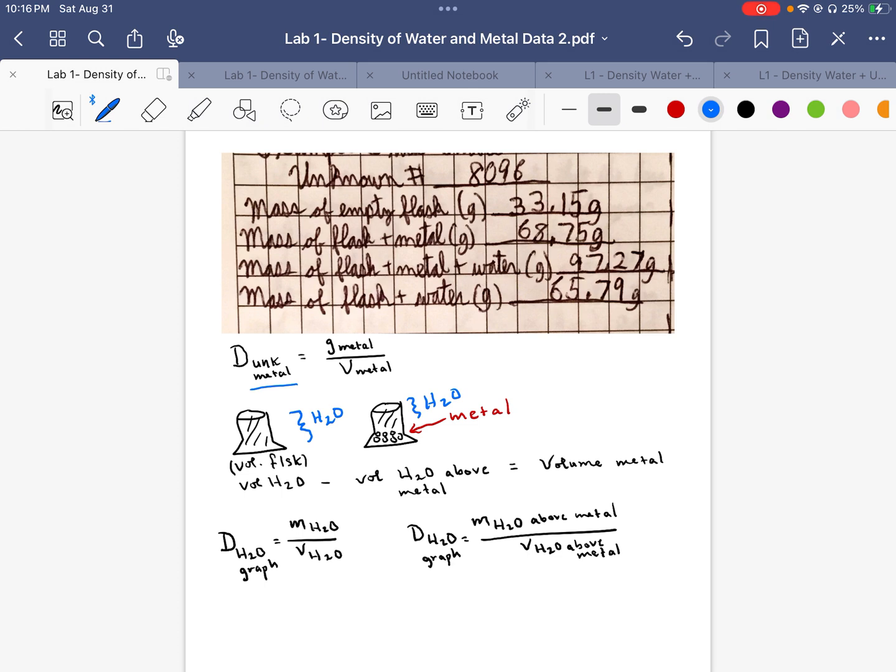Now the first thing is you've got a mass here of the metal. That should be relatively straightforward because you're going to look up here and notice you have the mass of the empty flask and the mass of the flask plus the metal. So you're going to subtract the mass of the empty flask from the mass of the flask and the metal. And that will give you the mass of your metal. So that right off the bat gives us one piece.